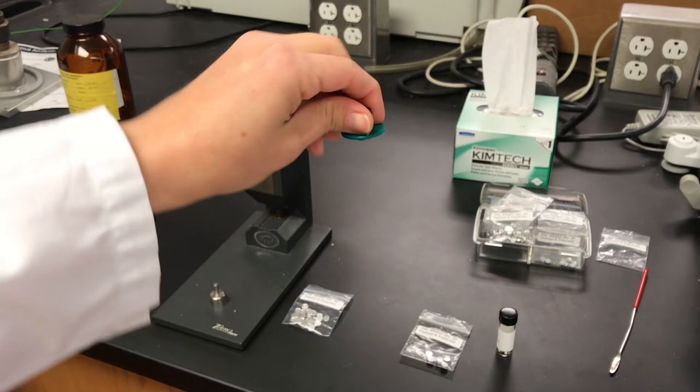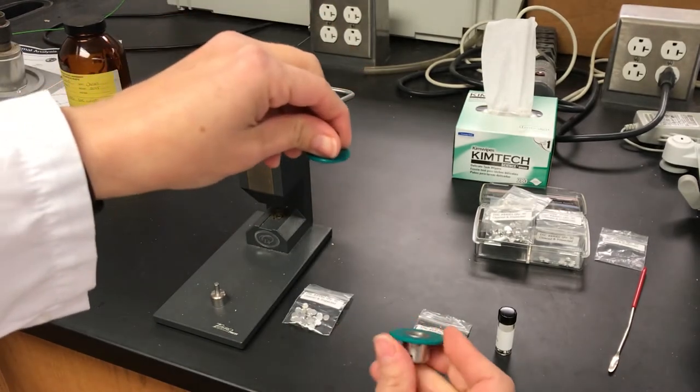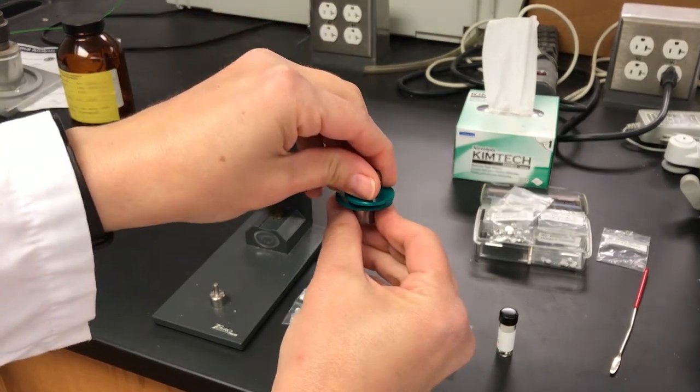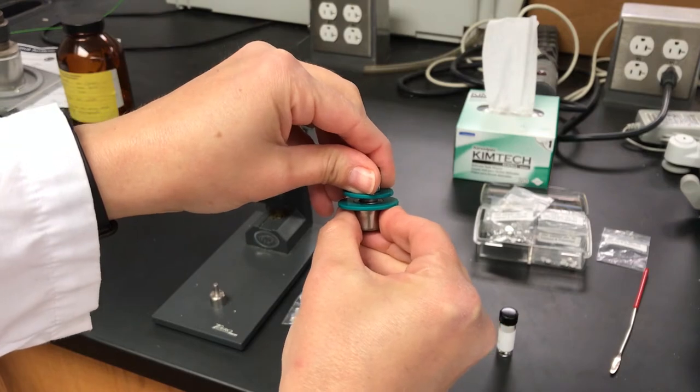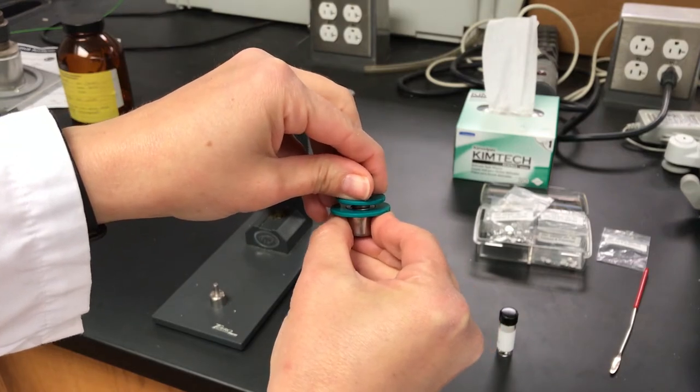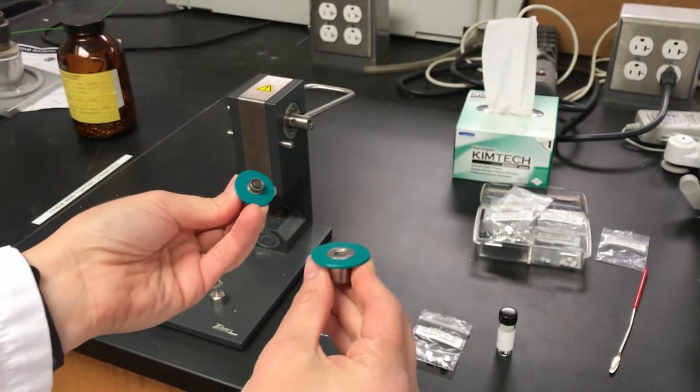So here's the top of the press and the bottom. And it's just going to press the sample or the lid and the pan together and make a nice seal.